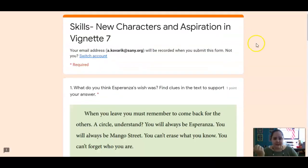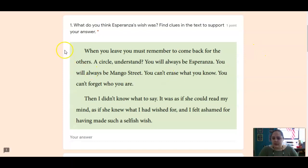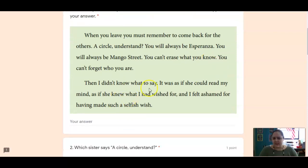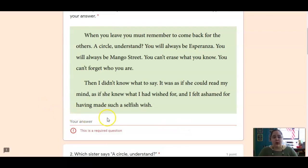All right, that is it for our reading. Let's head over to skills. So, here's an excerpt from that vignette we just read. It says, what do you think Esperanza's wish was? Find clues in the text to support your answer. So, she's telling her, you need to come back for the others. You will always be Mango Street. You can't erase what you know. And then she says, it was as if she could read her mind, if she knew what she had wished for. And she called it a selfish wish. So, what do you think Esperanza wished for when the sisters told her to make a wish?